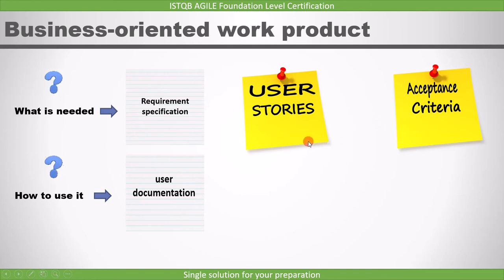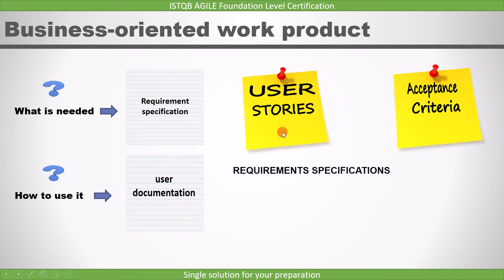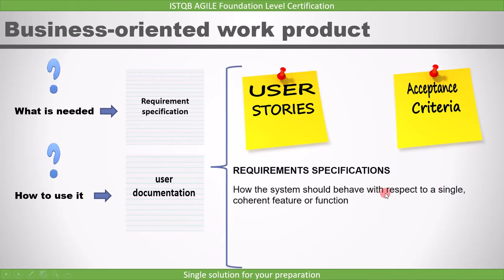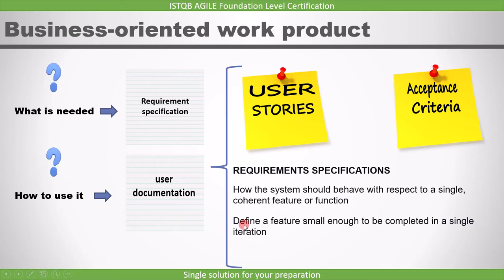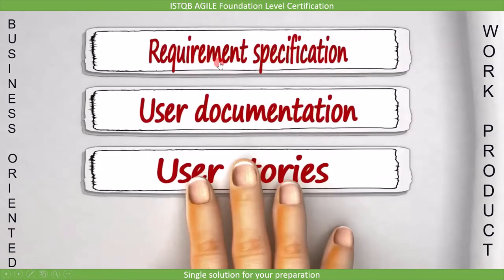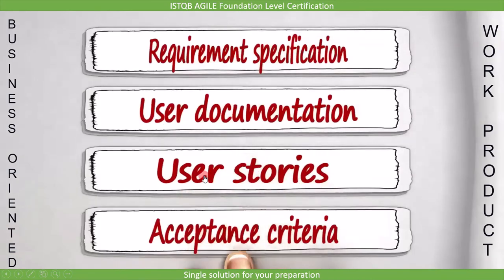In a traditional project, we use the term 'requirement,' and in agile, the requirement is referred to as a user story, provided by the business stakeholder. Therefore, user stories are a business-oriented work product. User stories are the agile form of requirement specifications and explain how the system should behave with respect to a single coherent feature or function. A user story should define a feature small enough to be completed in a single iteration. What you need to remember is: requirement specification, user documentation, user stories, and acceptance criteria are the work products of a business task.